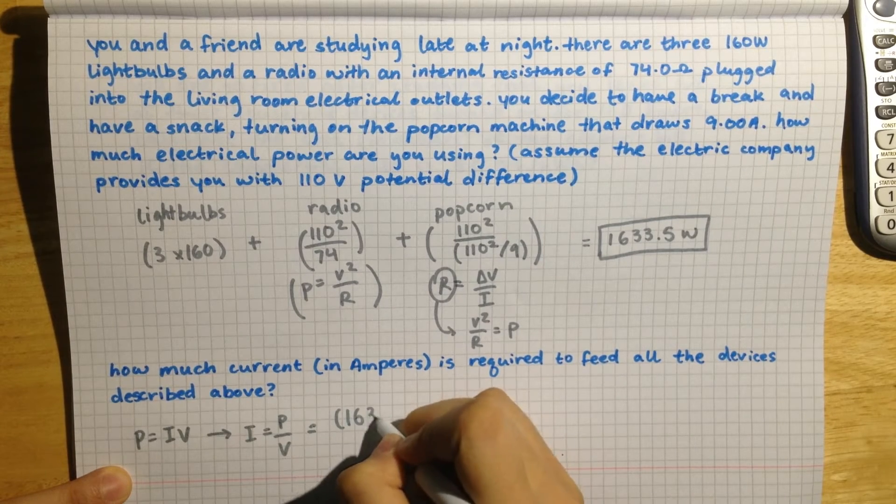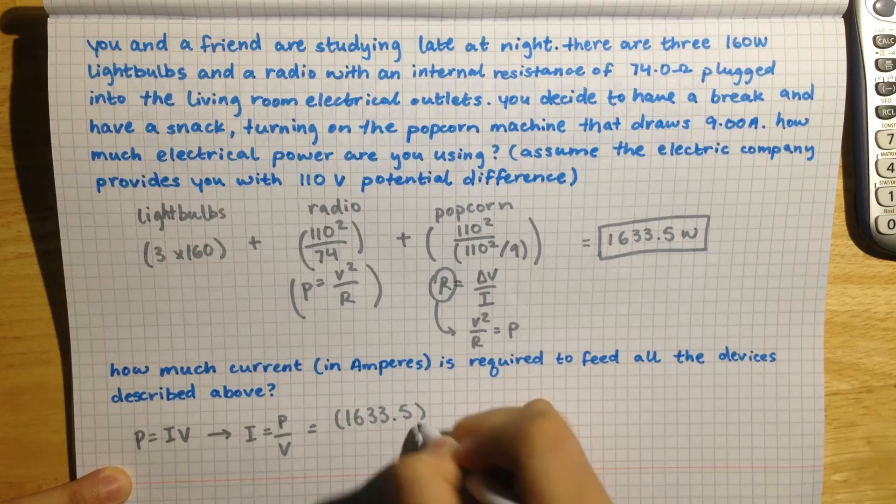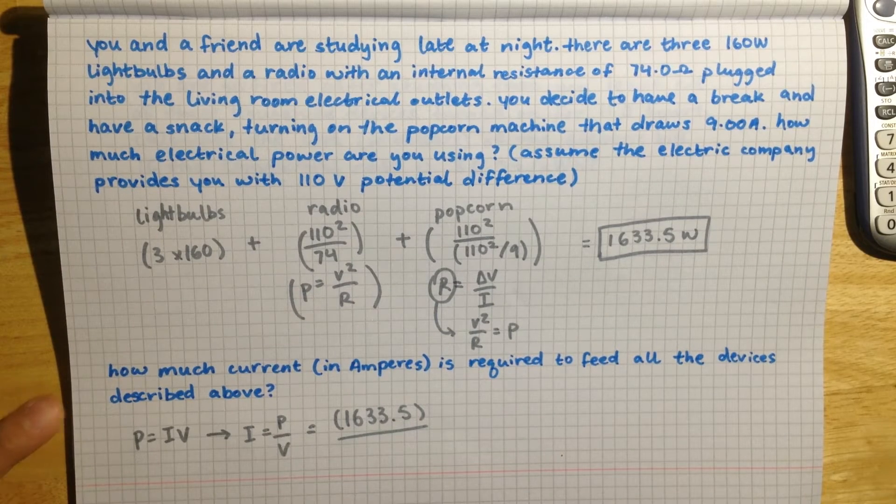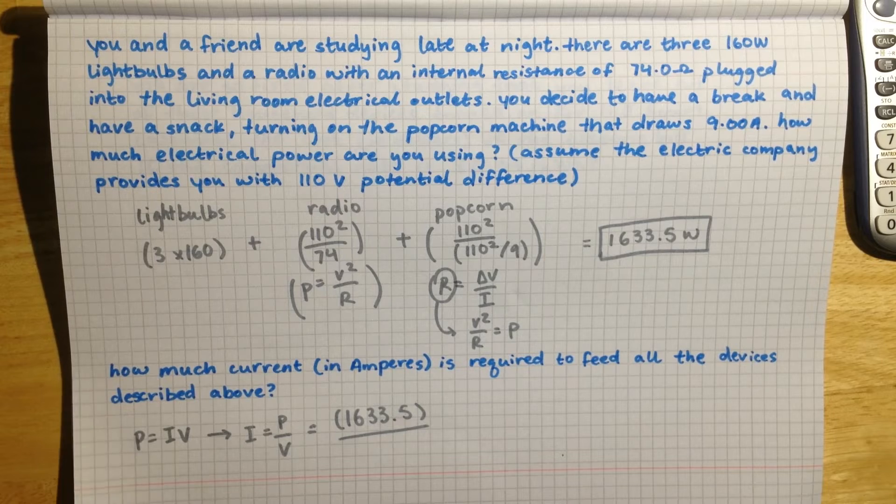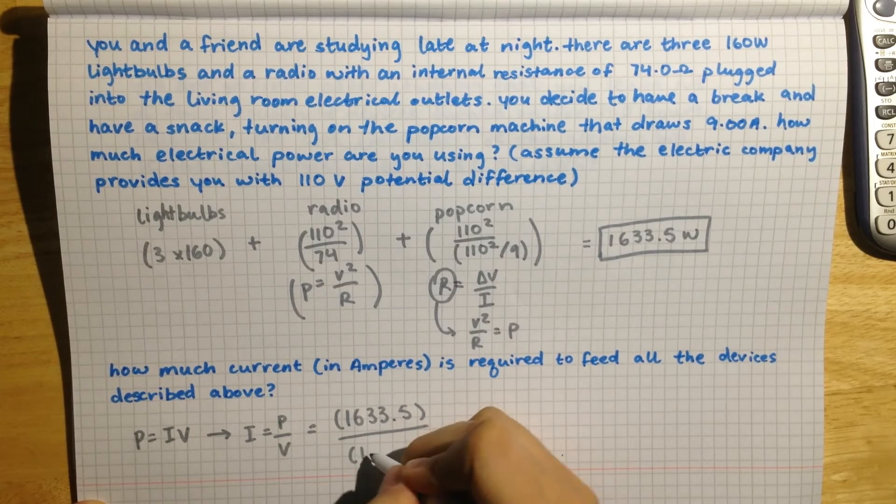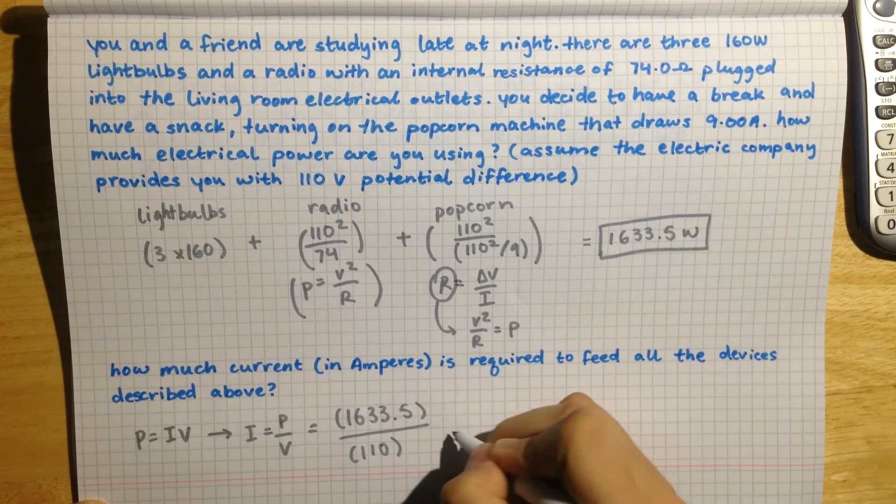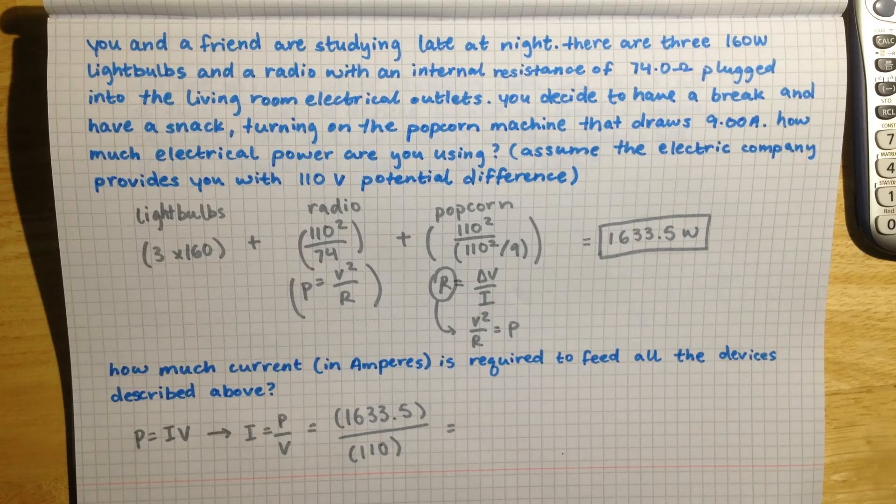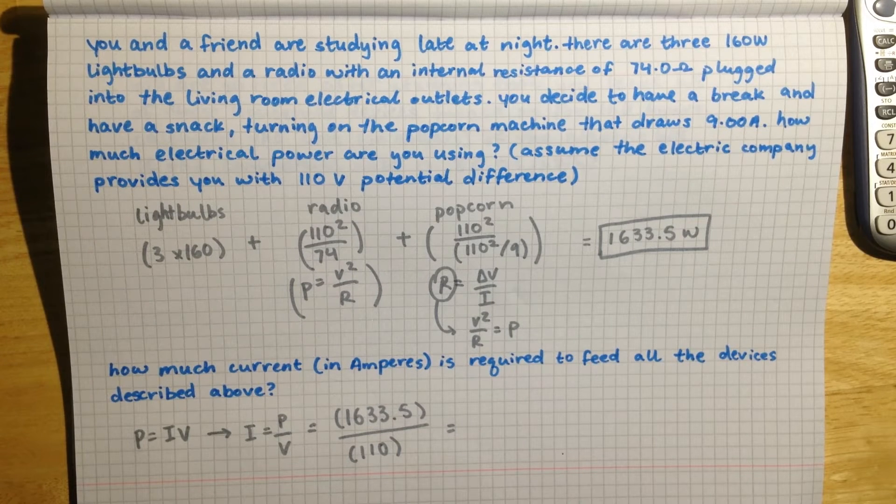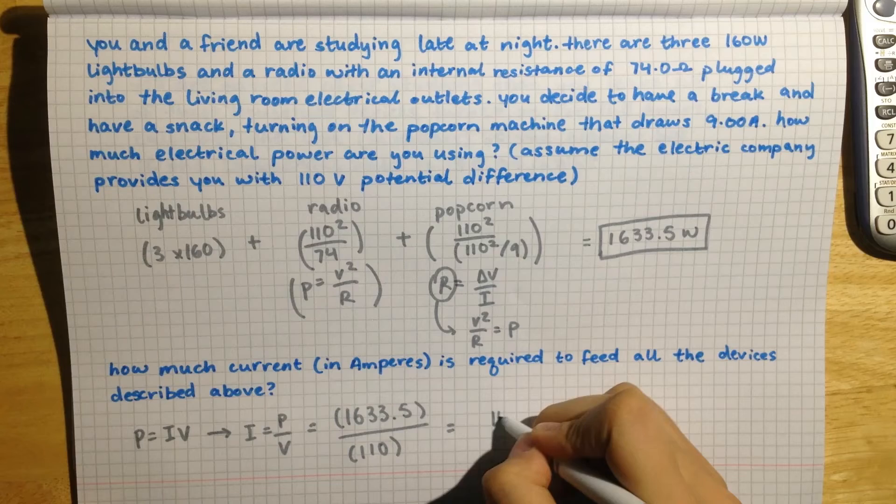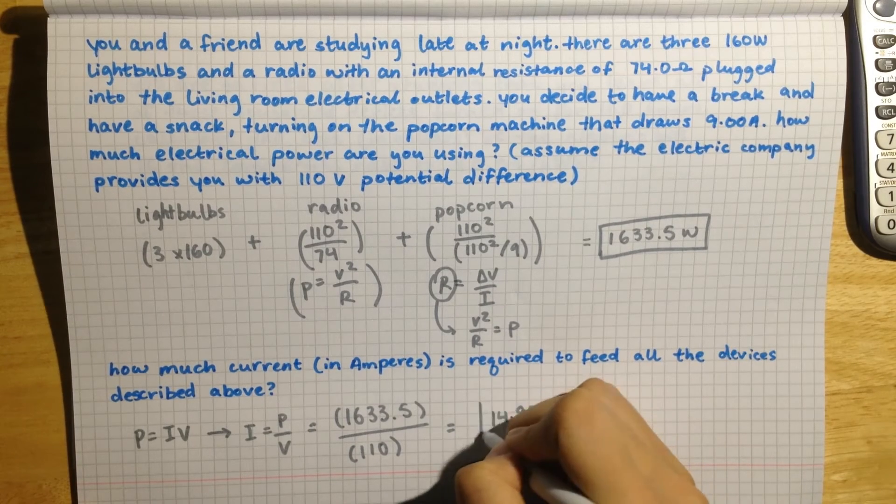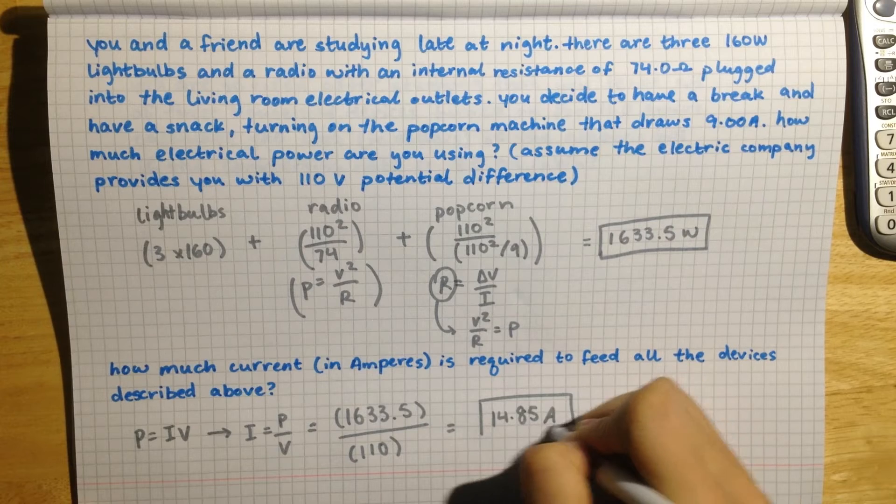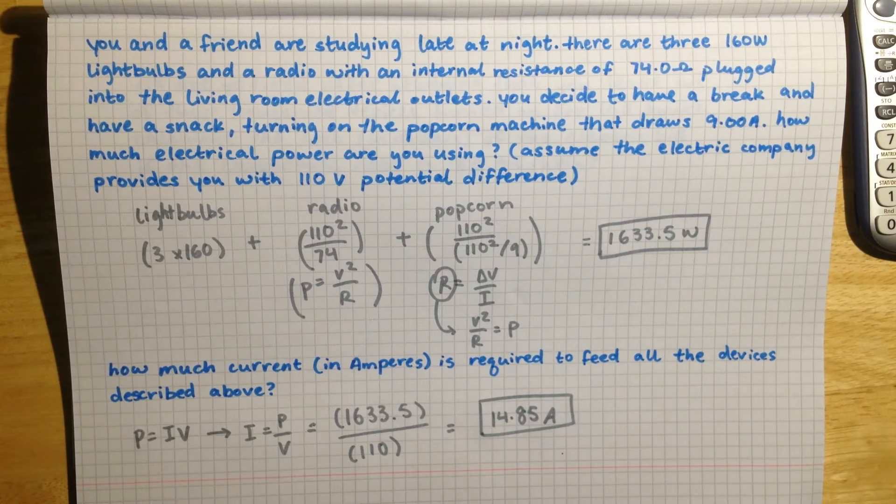So the power we just calculated in the last part of the question, 1633.5 watts, over the voltage, which again is a handy little piece of data that they have given us, 110 volts. And so when we do this calculation in the calculator we get a value of 14.85, and they asked us for amps, so this is the amount of current required to feed the three devices.